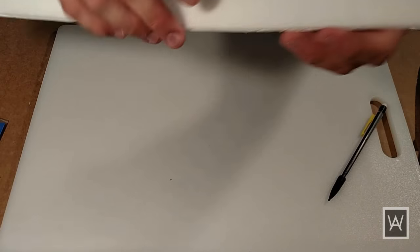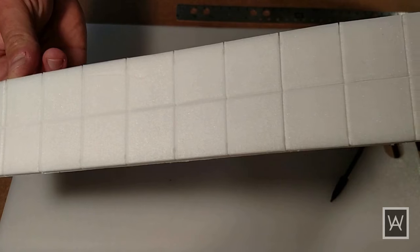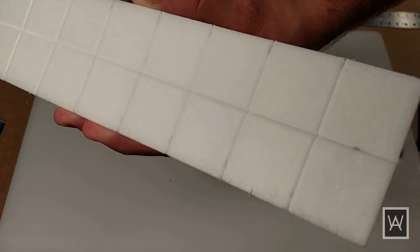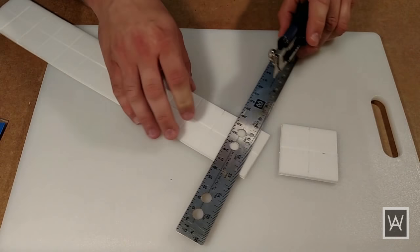You've made a 1 1⁄4 inch grid. Cut out 2x2 segments.